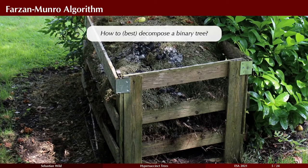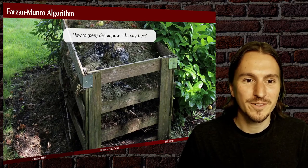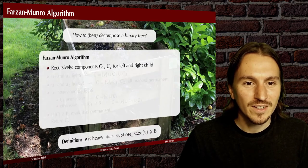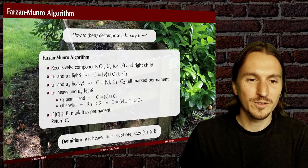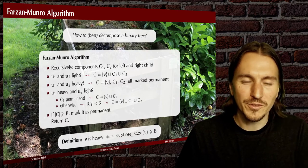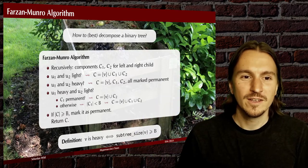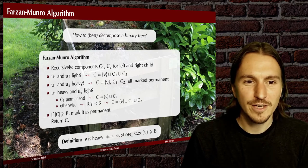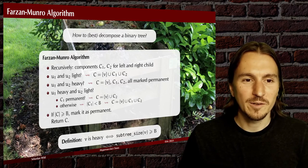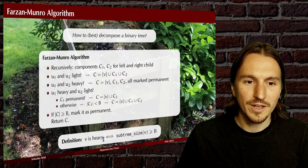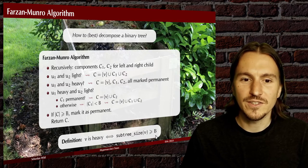I want to briefly show how to best decompose a binary tree. Here's the algorithm from Farzan-Munro 2014 — a bottom-up method, relatively straightforward, fitting on one slide. The only thing to remember is we call a node heavy whenever it has at least b descendants.